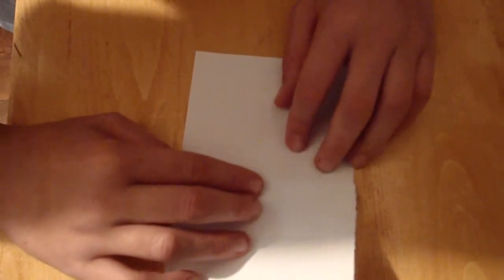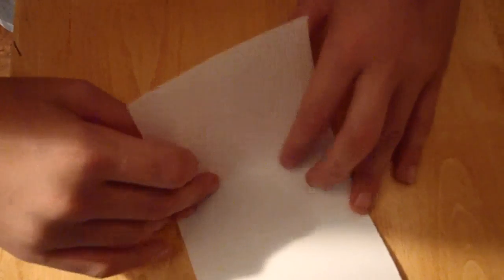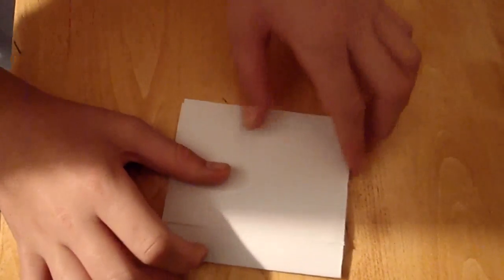Once you've done that, you want to take this end, fold it about three-fourths of the way down. Then you take this one and fold it right there to the end of that one. Then you want to fold it in half.